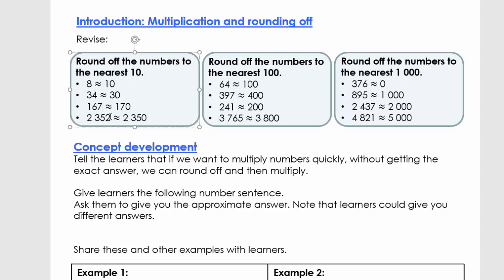For the number 2,352, we only look at the 10s and the units: 52. 52 is between 50 and 60. According to the rounding off rules, anything that ends on 2 goes to the previous 10 — so that's 50. I want you to pause and quickly explain this to somebody.